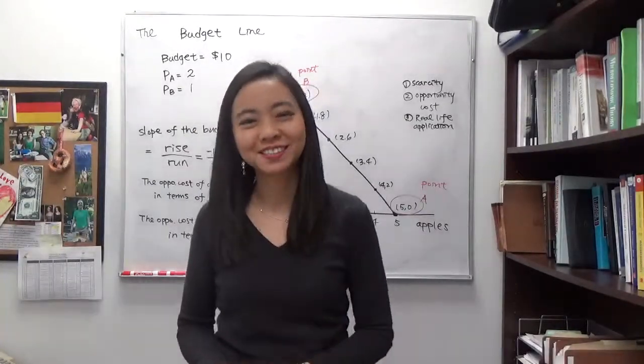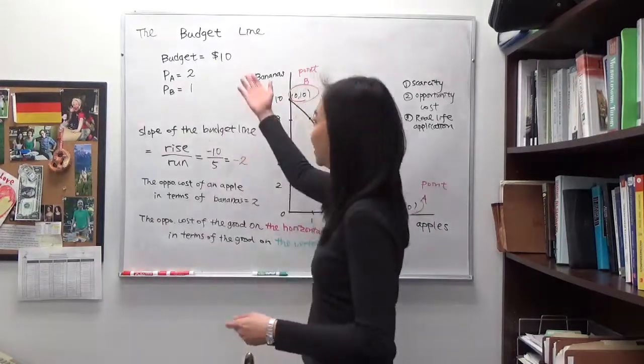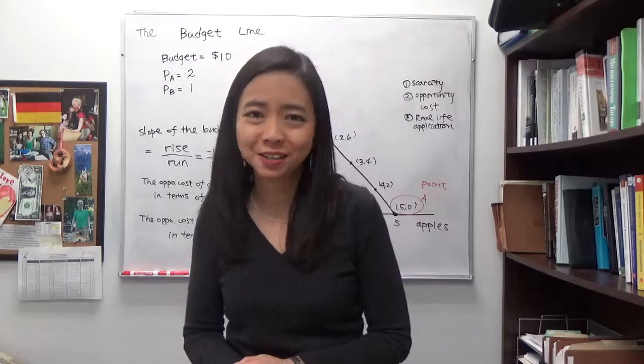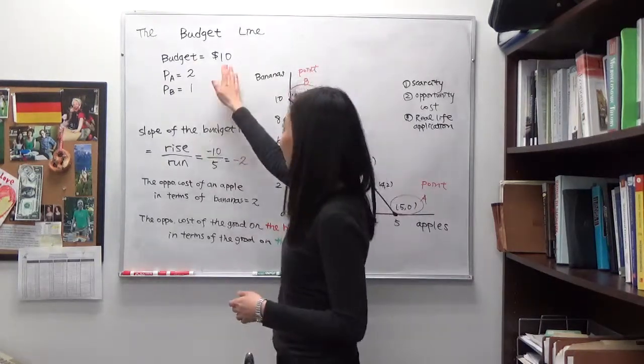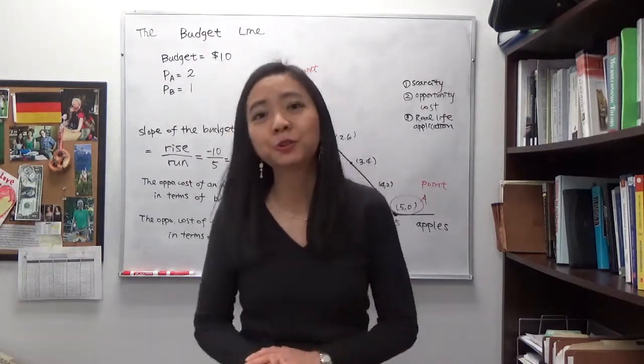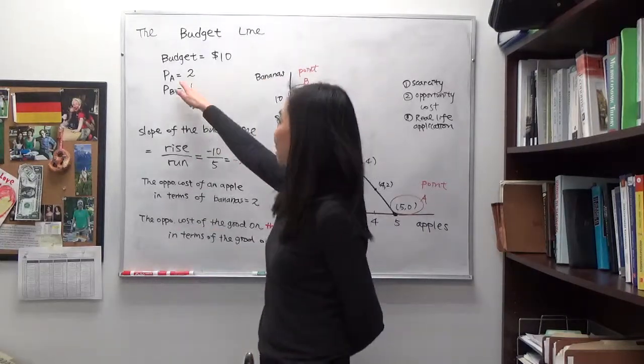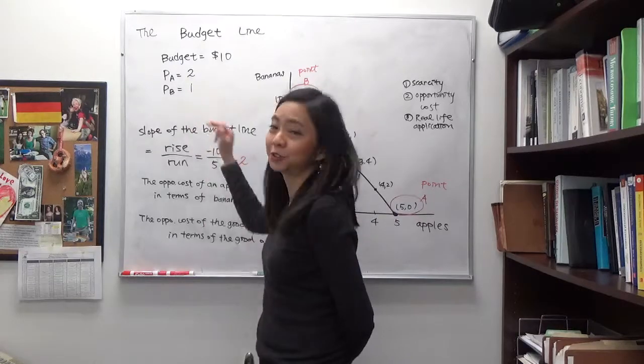Hello everyone! My name is Iris Franz and today we're going to talk about the budget line. Suppose you have a budget for fruit in a supermarket. Your budget is $10 and you plan to buy two kinds of fruit. One is apple and one is banana. The price of an apple is $2 and the price of a banana is $1.